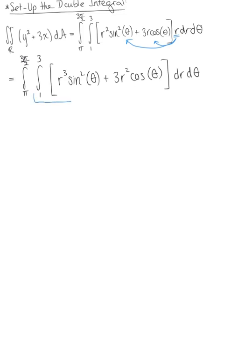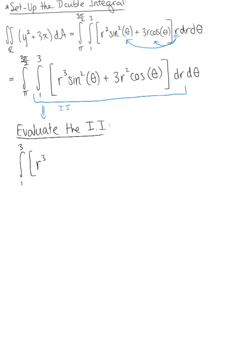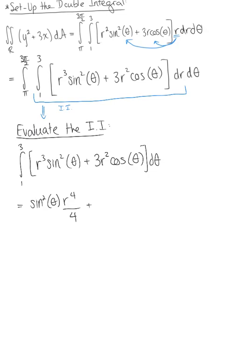Now we evaluate the inner integral with respect to r. We have the integral from 1 to 3 of r³ sin²θ + 3r² cosθ dr. Integrating gives sin²θ · (r⁴/4) + r³ cosθ, since the 3's cancel. We now evaluate from r = 1 to r = 3.